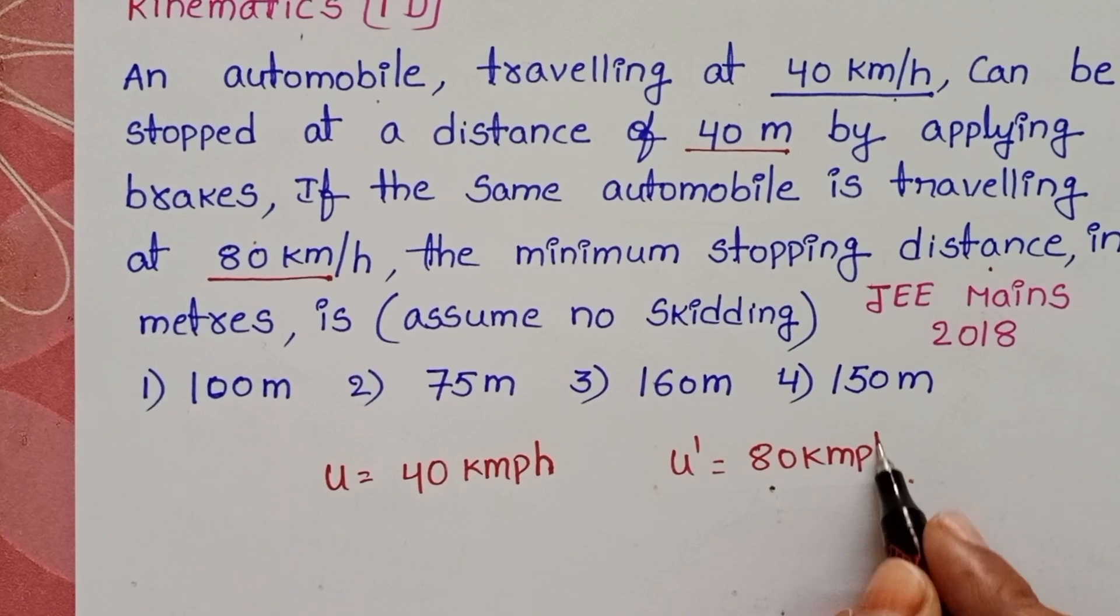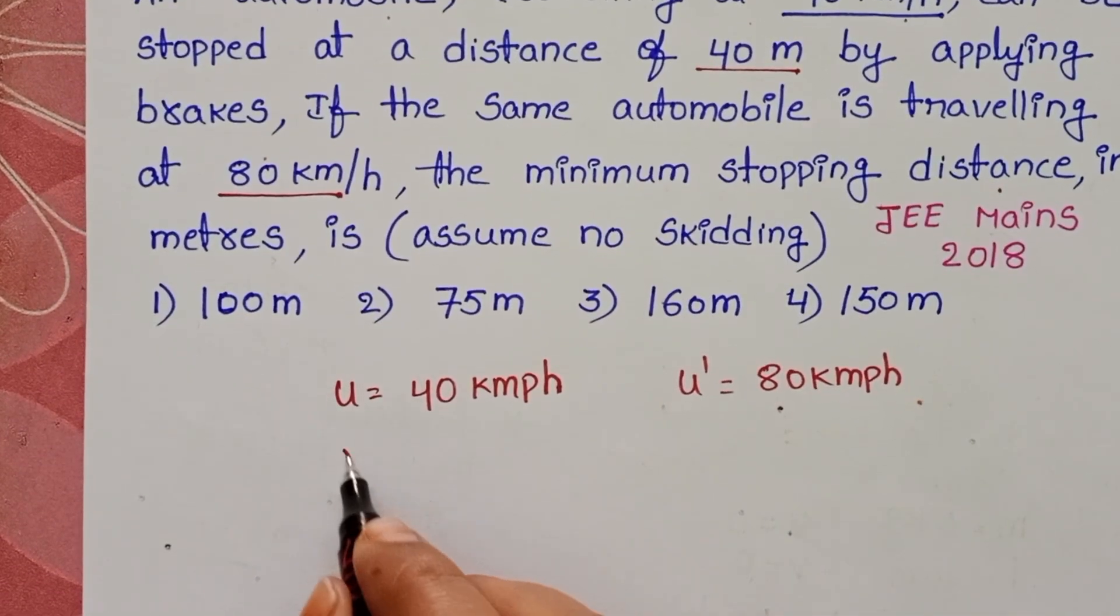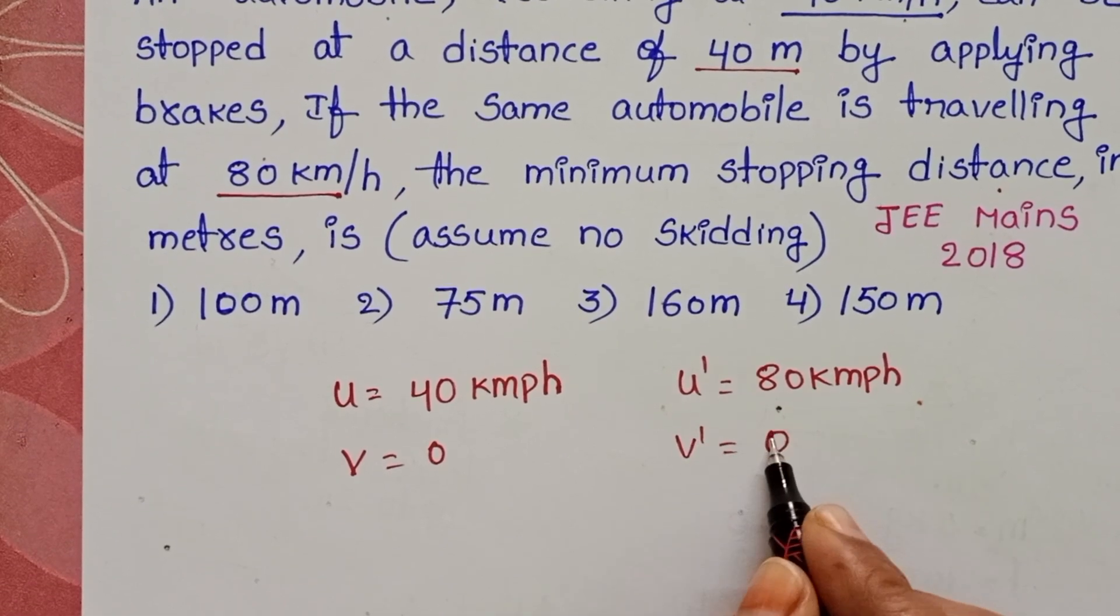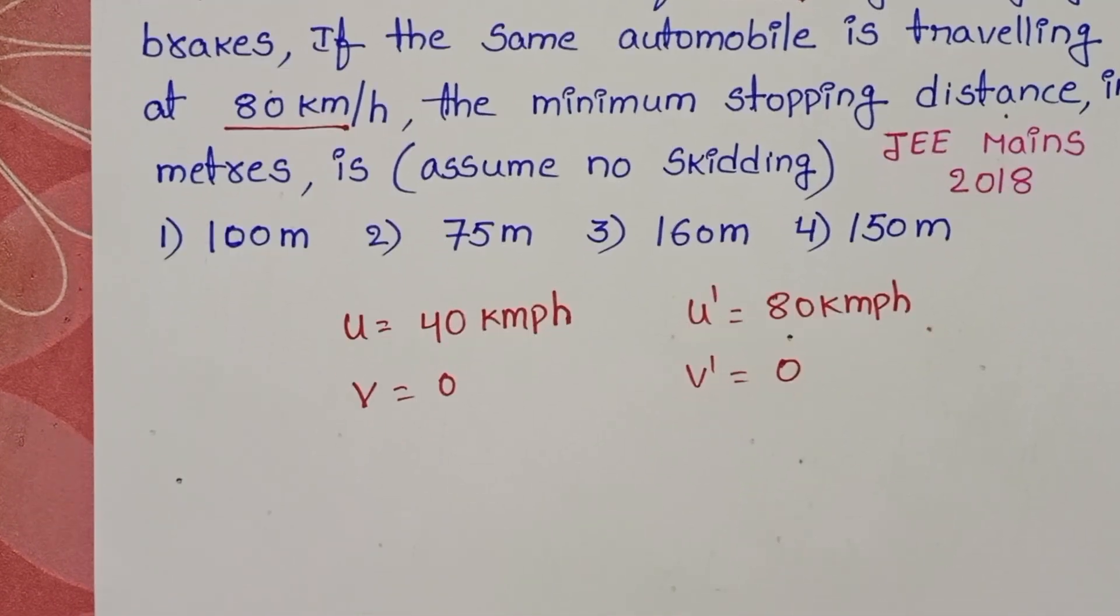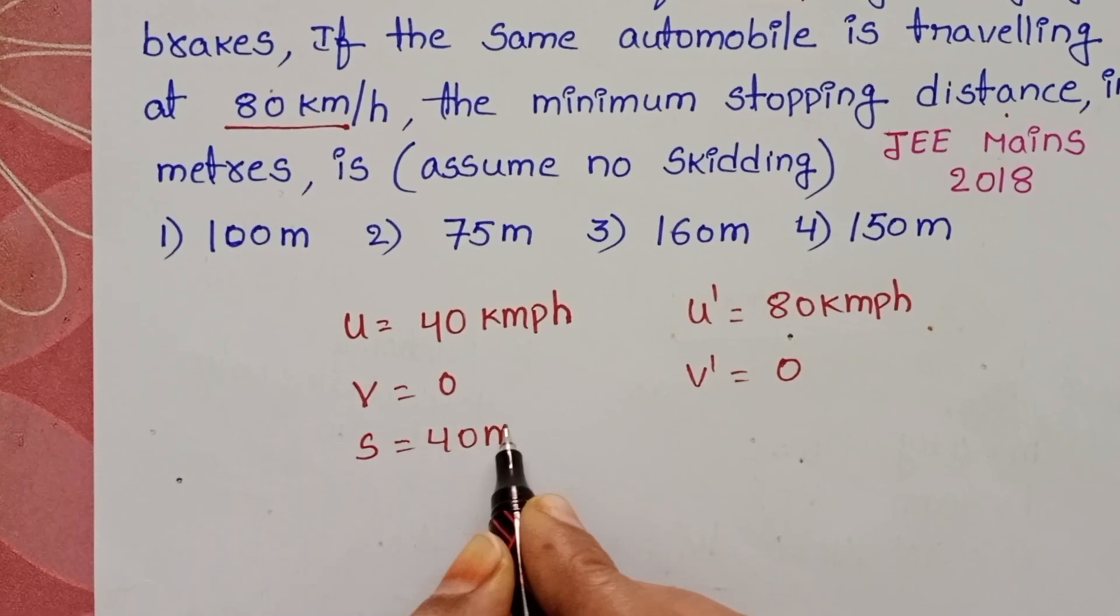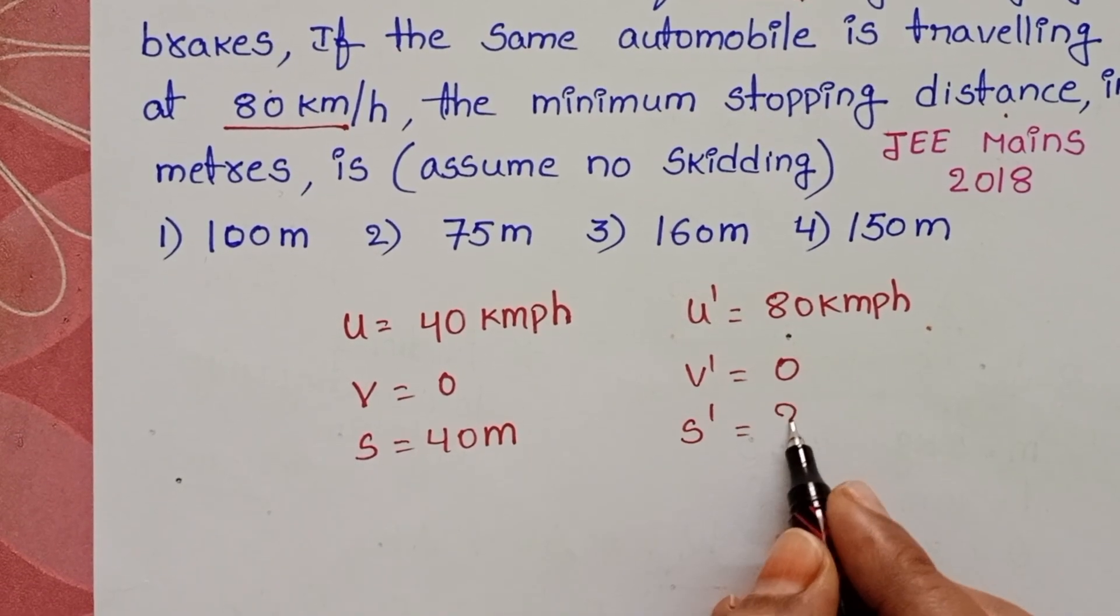Finally, in both cases the automobile comes to rest. The final velocity v is 0 in both cases. In the first case, the stopping distance is 40 meters. In the second case, we have to find out the stopping distance.